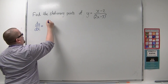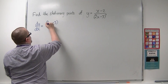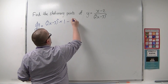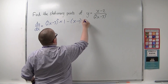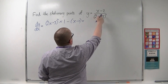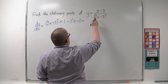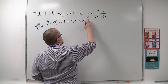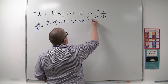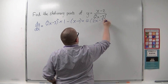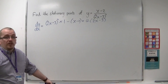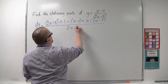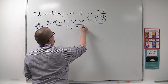Start with the bottom, that's 2x minus 3 all squared, times by the derivative of the top, which is just 1. Take away the top, times by the derivative of the bottom. Using the chain rule on the bottom, the 2 comes out to the front, as does the 2 inside, because we differentiate the outside then the inside. So that would be 4 lots of 2x minus 3, then take 1 off the power, leaving just 2x minus 3. All over the bottom squared, so 2x minus 3 to the power of 4.